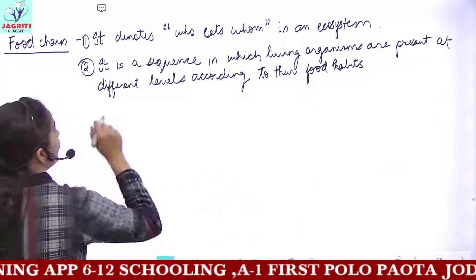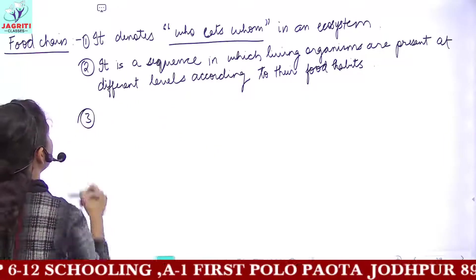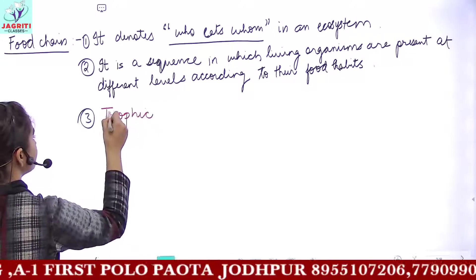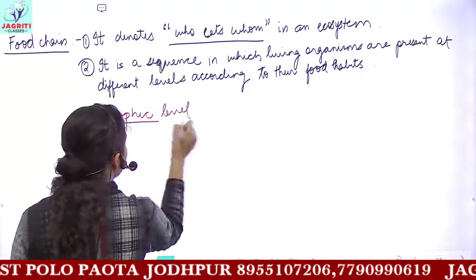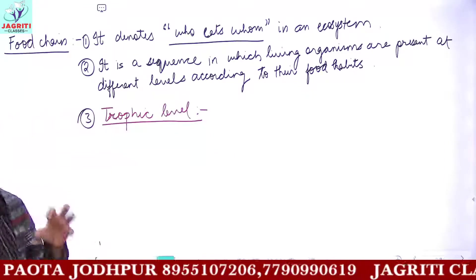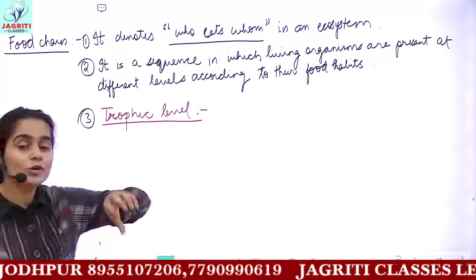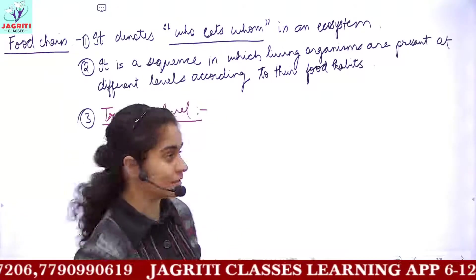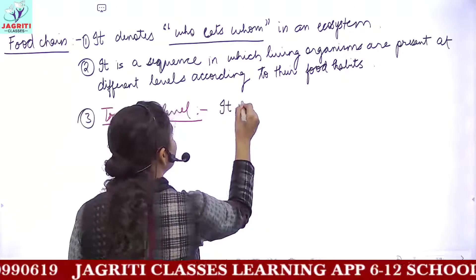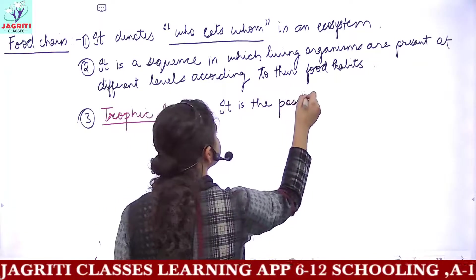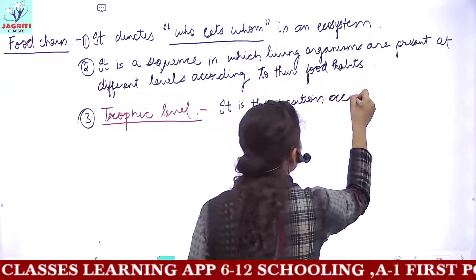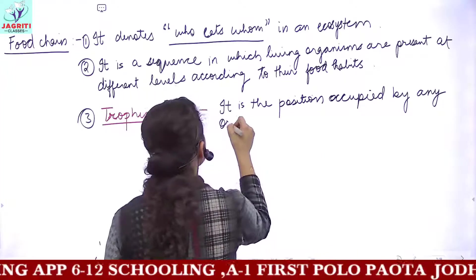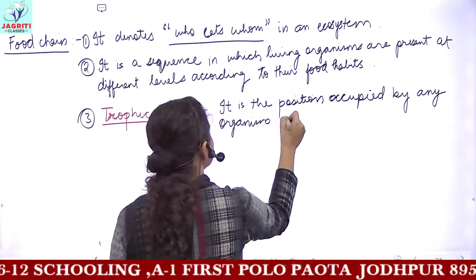The next important term we will be discussing is called the trophic level. Trophic level is the different or particular position occupied by an organism when we are dealing with a food chain. So trophic level is the position occupied by any organism in a food chain.